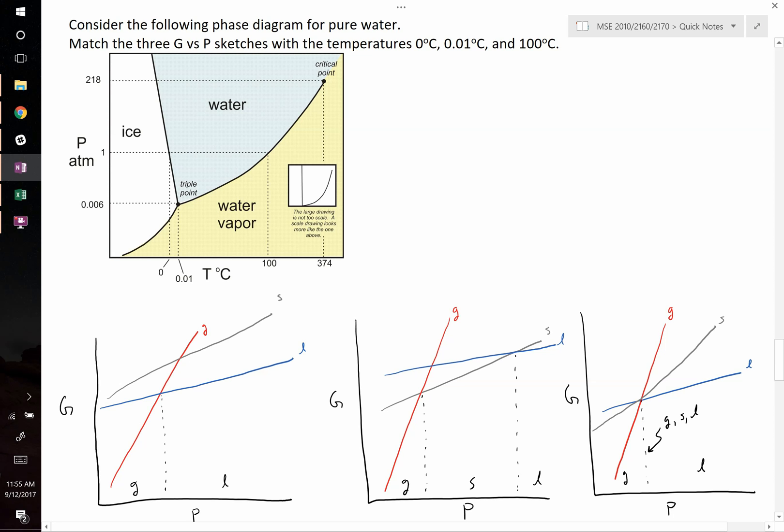Let's start with at zero. At zero Celsius, right here, we start out as a gas, and as you increase pressure, you become a solid, and eventually you become a liquid. So which one of these three plots does that? Right here, the middle one, gas, solid, liquid. So this must be temperature equals zero degrees Celsius.